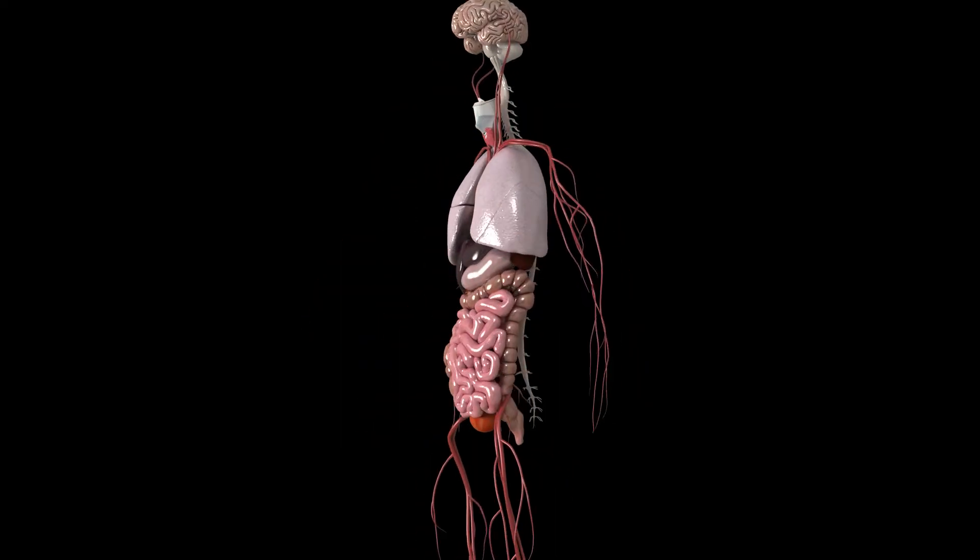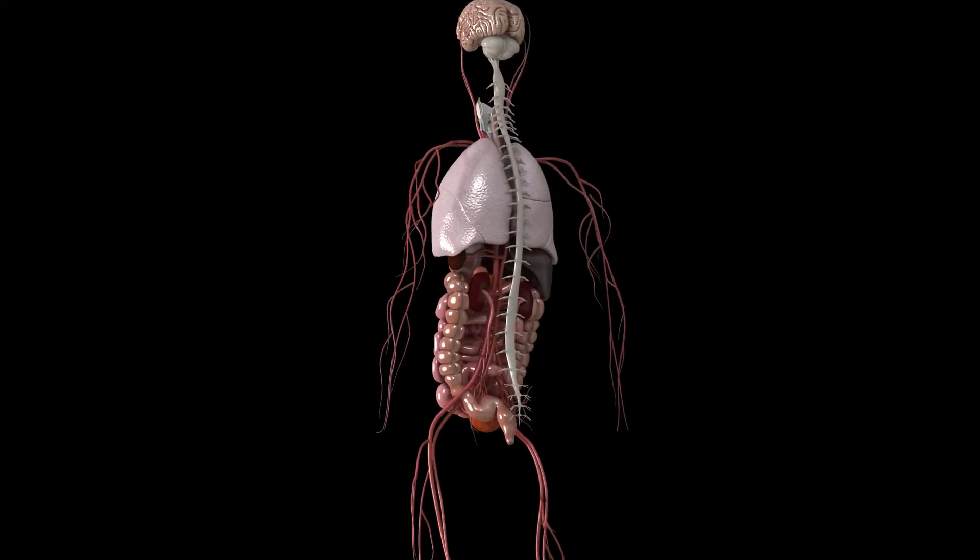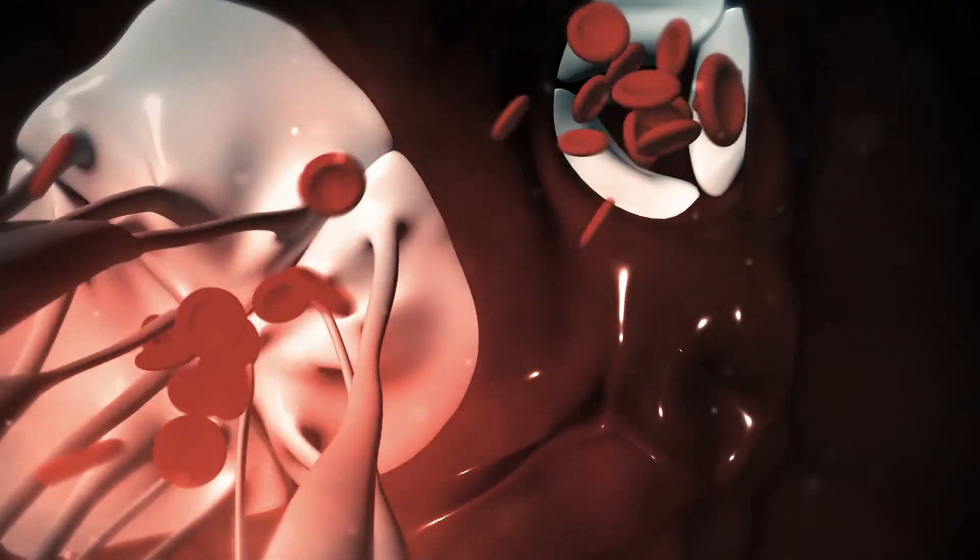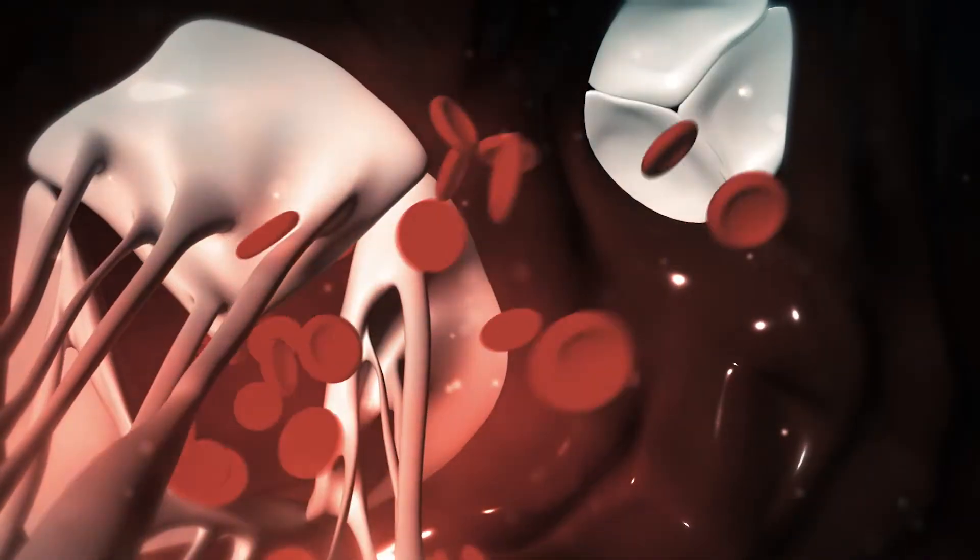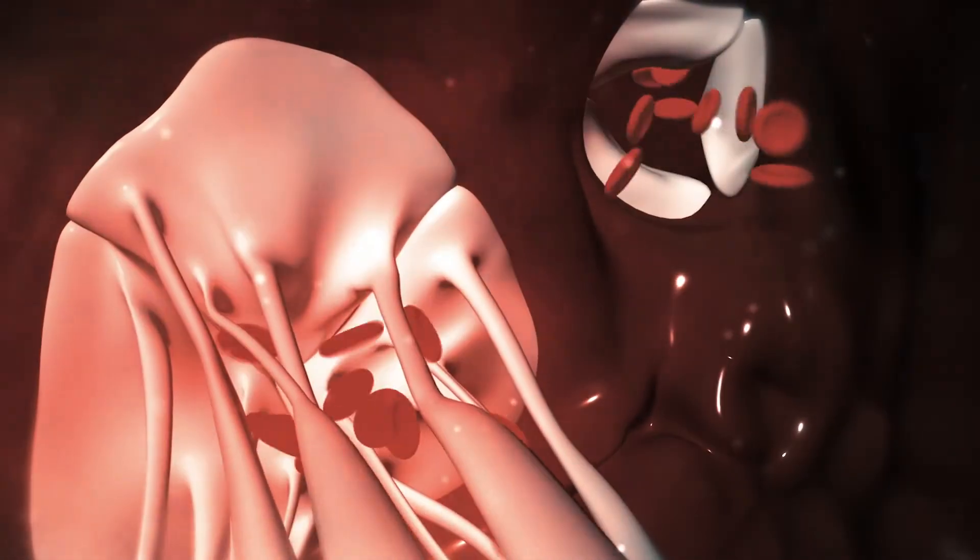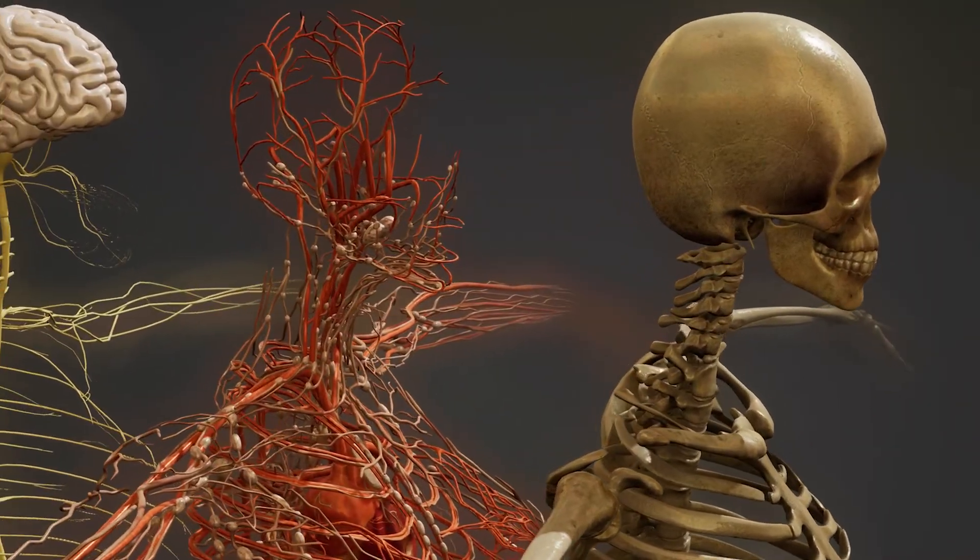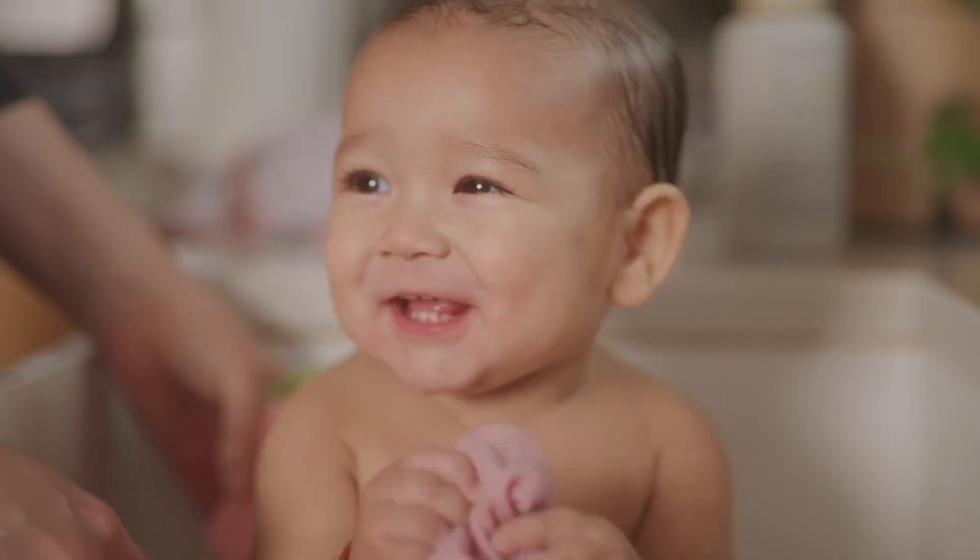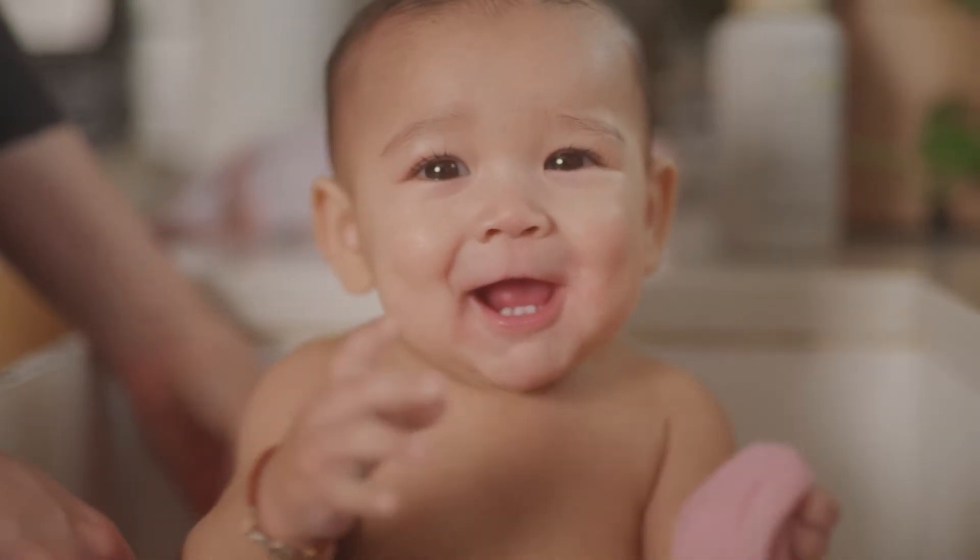Different organs work together to form an organ system, such as your cardiovascular system, where your heart and blood vessels work together to pump blood, oxygen and nutrients throughout your body. In turn, these various organ systems group together to form you, a living organism.